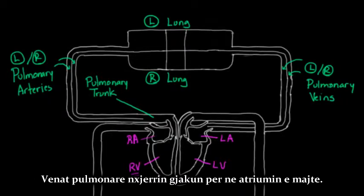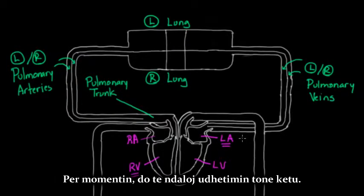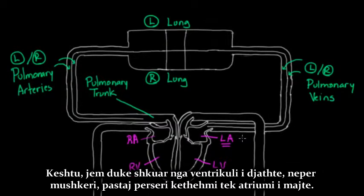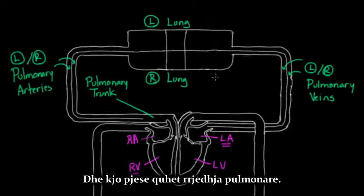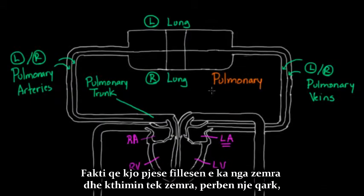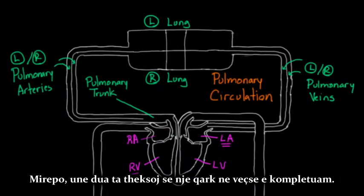The pulmonary veins drain blood into the left atrium — so now we're on the other side of the heart. I'll pause the journey here. We've gone from the right ventricle, around to the lungs, and back again to the left atrium. This is the first part of our journey.